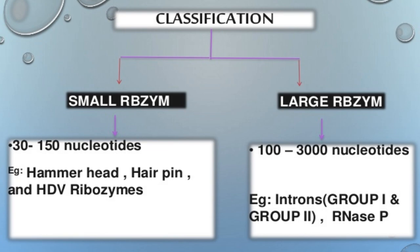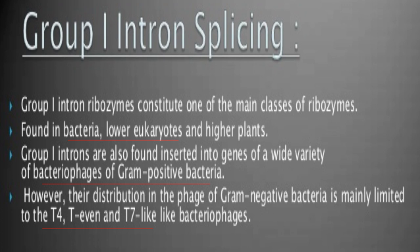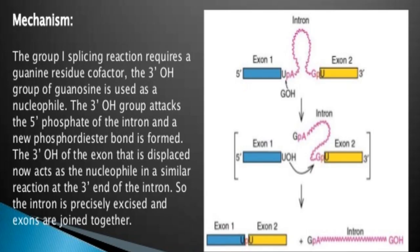Types of ribozymes include Group 1 and Group 2 intron splicing ribozymes, RNase P, hammerhead ribozyme, hairpin ribozyme, and ribosomes. Group 1 intron ribozymes constitute one of the main classes of ribozymes found in bacteria, lower eukaryotes, and higher plants. Group 1 introns are also found inserted into genes of a wide variety of bacteriophages of gram-positive bacteria; however, their distribution in phages of gram-negative bacteria is mainly limited to T4, T7-like bacteriophages.